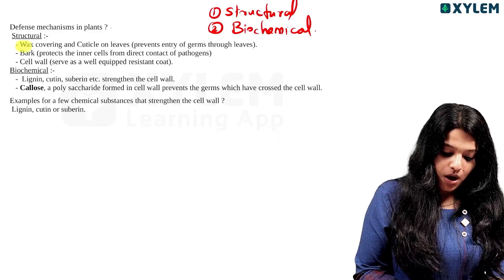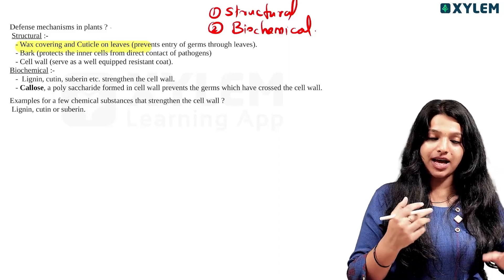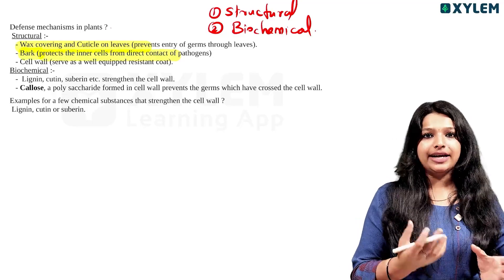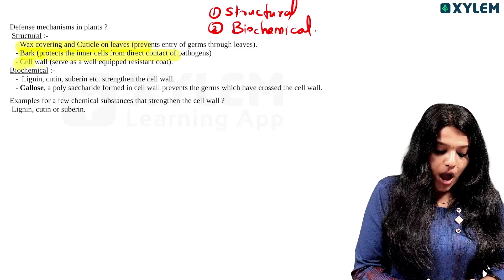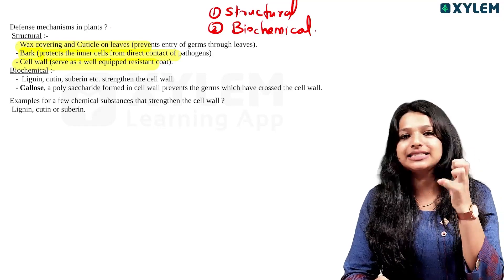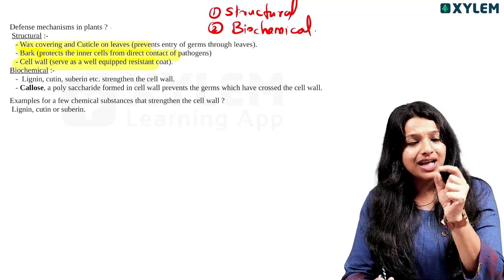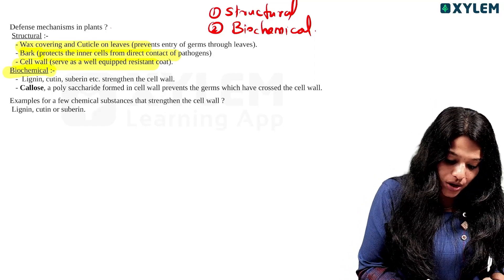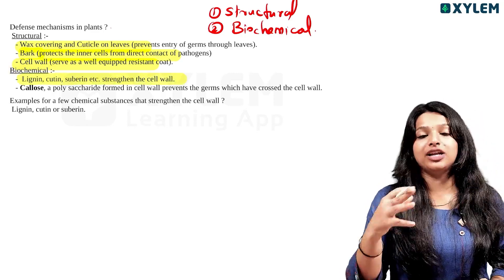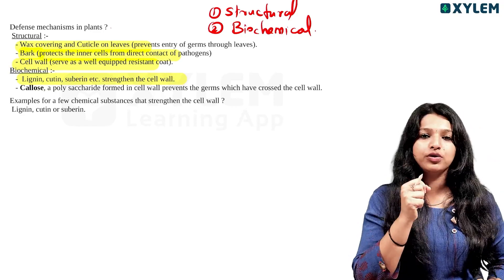Wax covering cuticles — that is why everyone recognizes it as structural defense, because it prevents the germs. The plant cell and plant tissues represent structural defense mechanisms. We also have biochemical support, such as lignin, cutin, suberin, and the cell wall. This is a chemical defense mechanism.